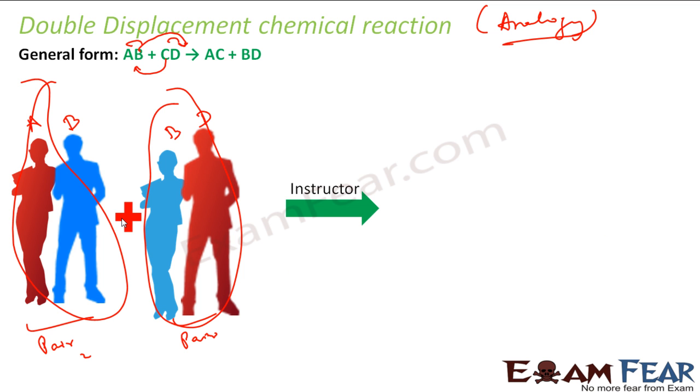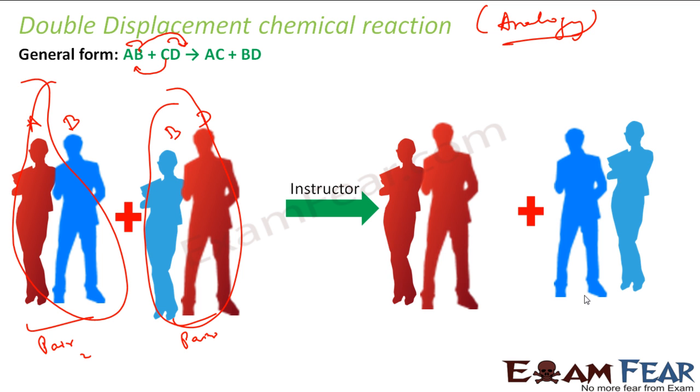Now again the instructor came and told that no man, it does not look good. Red should pair with red and blue should pair with blue. So now they are like this. Now if you see this guy was A and the red guy was D. The blue guy was B and the blue lady was C.